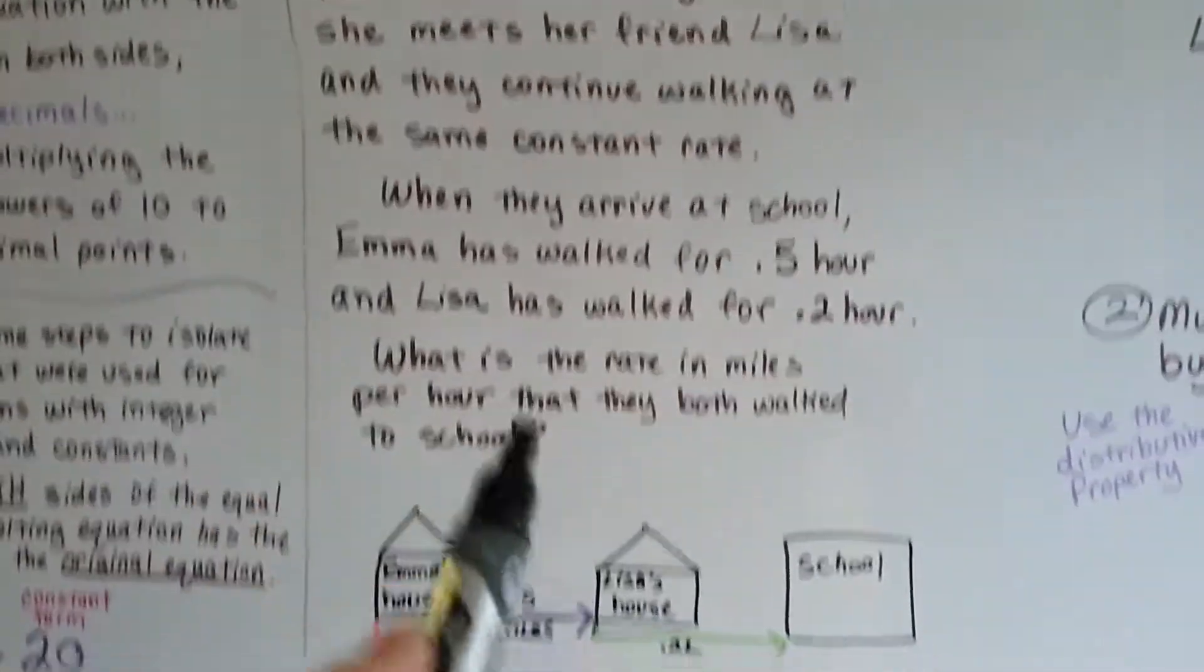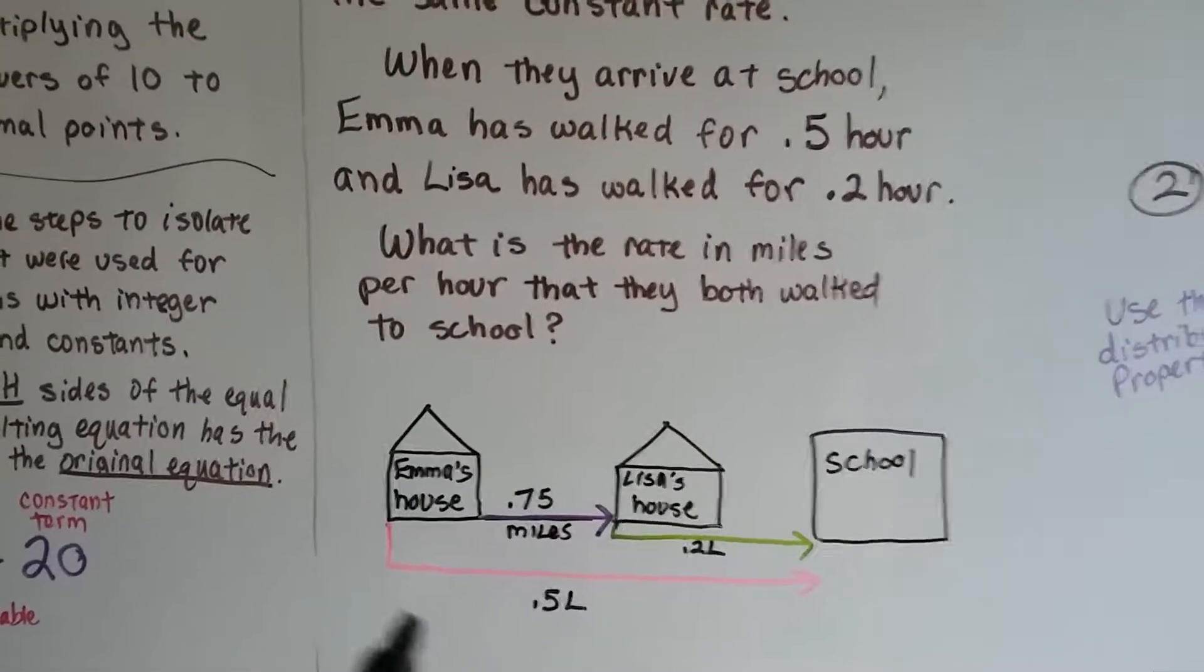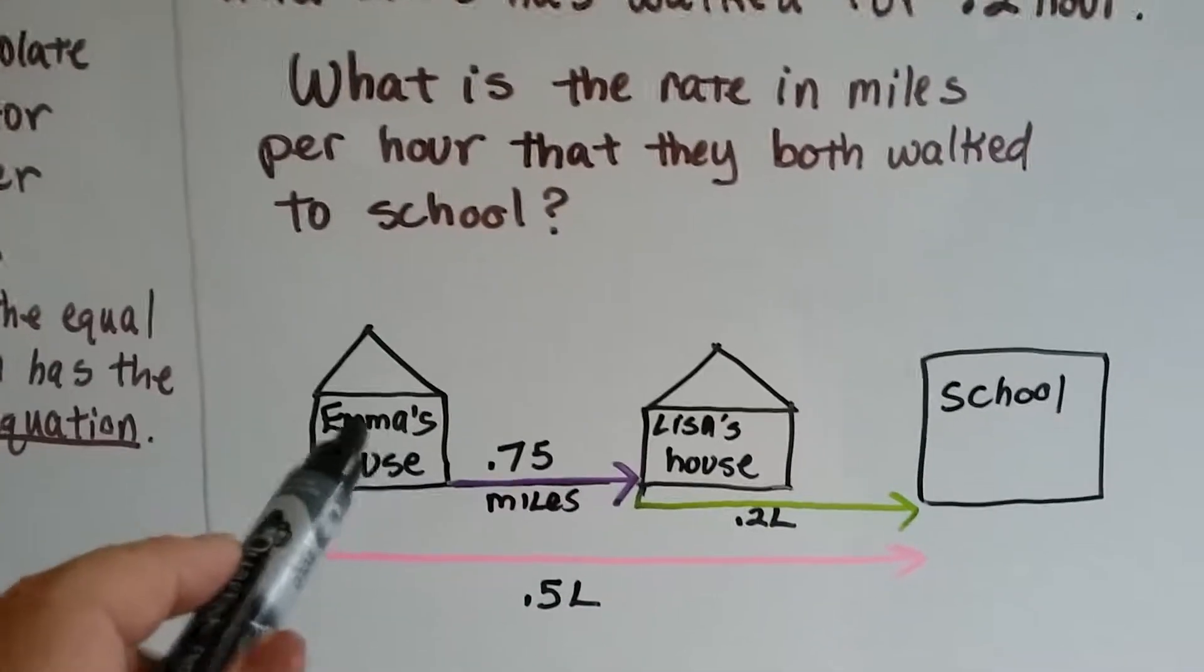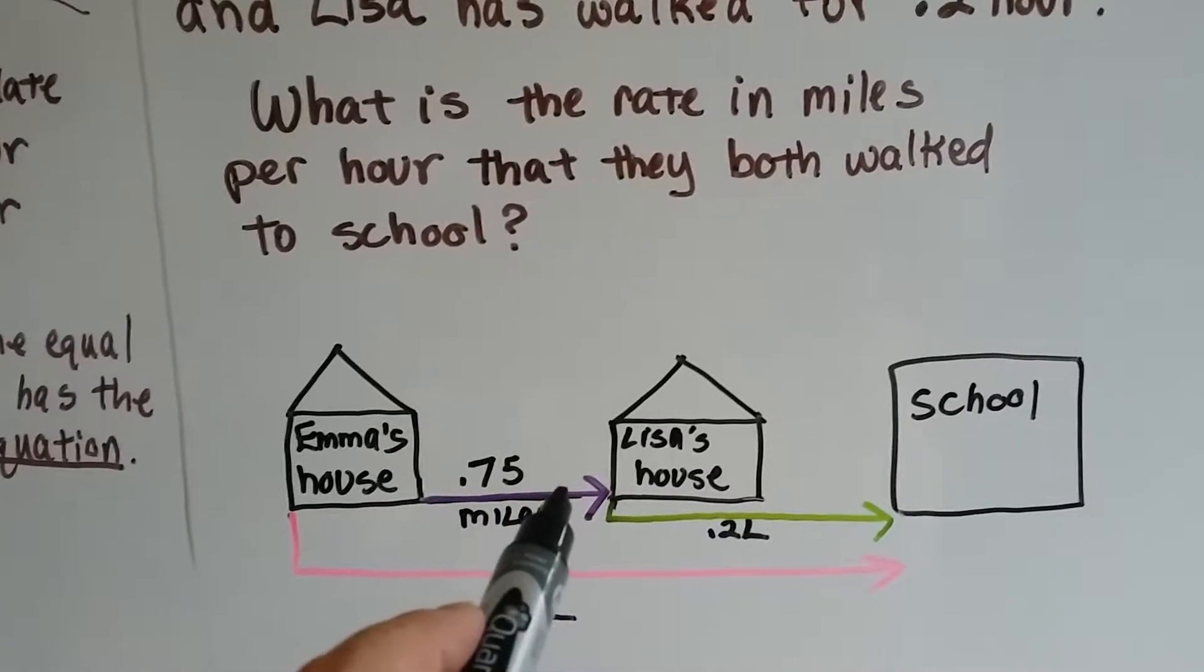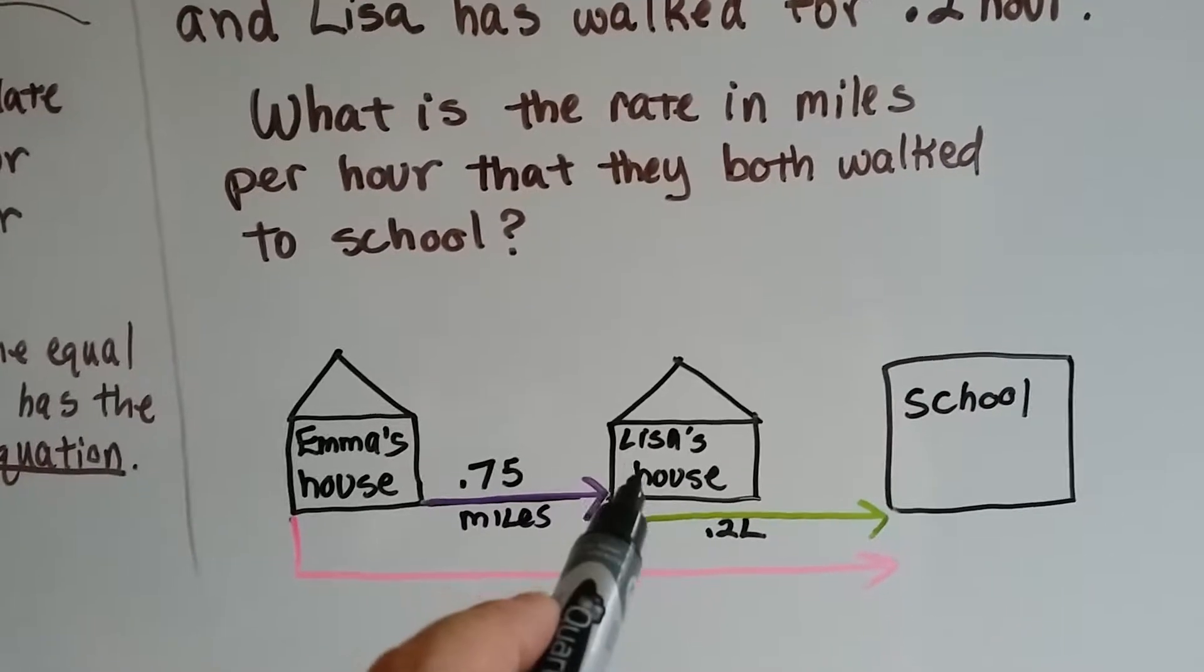So here's a little drawing. Whenever you're confused about a word problem, it's a really good idea to make a drawing out of it. So here's Emma's house, and she left her house and started walking towards school. She went .75 miles when she got to Lisa's.